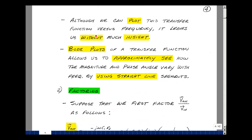Although we can plot the magnitude and angle versus frequency, it doesn't leave us with much insight as to what's going on. Bode plots of a transfer function allow us to see the approximate value of the magnitude and angle versus frequency by using straight line segments.